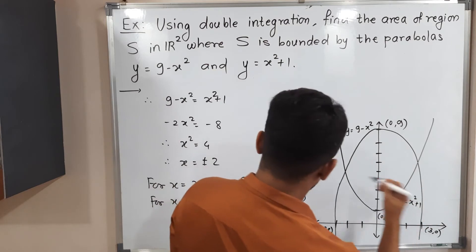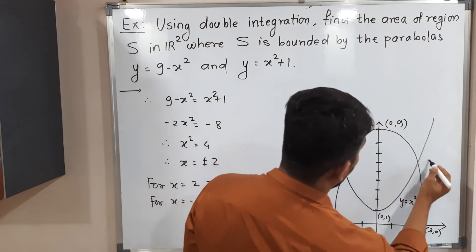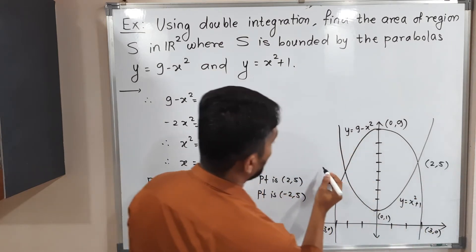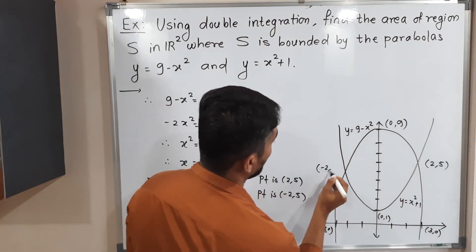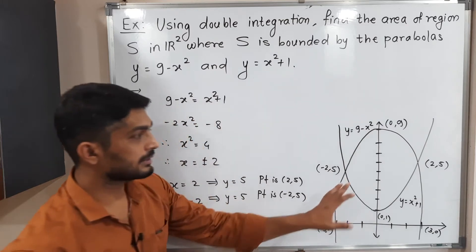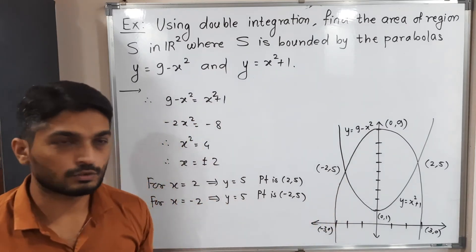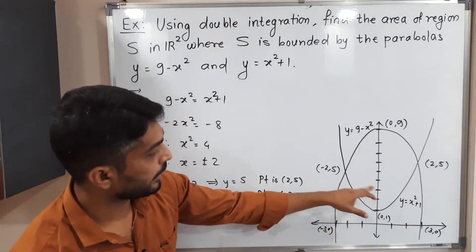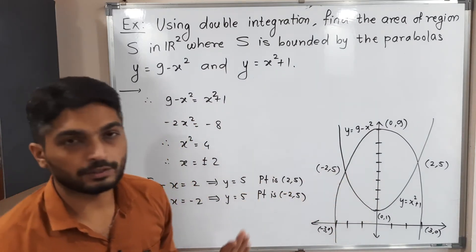For x = 2, substituting gives y = x squared plus 1 = 4 + 1 = 5, so the first intersection point is (2, 5). For x = −2, (−2) squared = 4 as well, so y = 5 again. The second intersection point is (−2, 5). These two points are marked on the diagram.